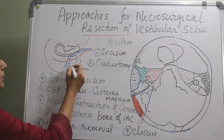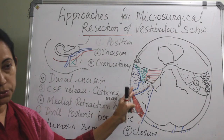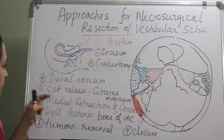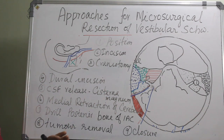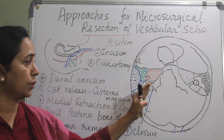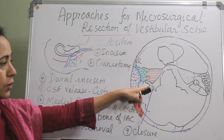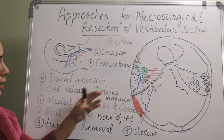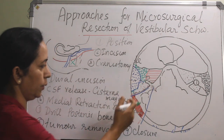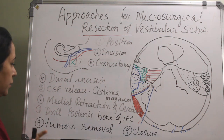After the craniotomy, the dura is incised and you can see the sigmoid sinus and the cerebellum. Before retracting the cerebellum, CSF should be released from the cisterna magna. After releasing the CSF, retract the cerebellum — a medial retraction is needed to get a good view of the CP angle. If there is involvement of the internal acoustic canal, the bone from the posterior wall of the internal acoustic canal has to be drilled out to get a very good view of the tumor, whether it is in the CP angle or in the internal acoustic canal.